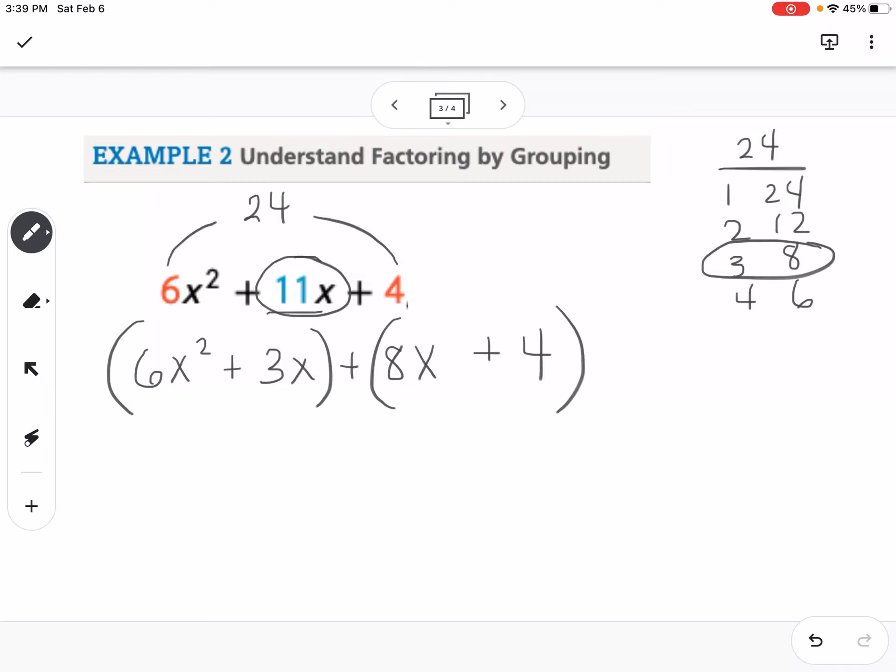Then my next step is I am going to factor out a GCF from both parentheses. So in the first parentheses, I know 6 and 3, 3 goes into both of those, and they both have an x. So I'm going to take out a 3x, which is going to leave me with 2x if I take out 3x from 6x squared. And then if I take the whole 3x out, I still have to leave something in its place. So I'm going to leave a 1 right there.